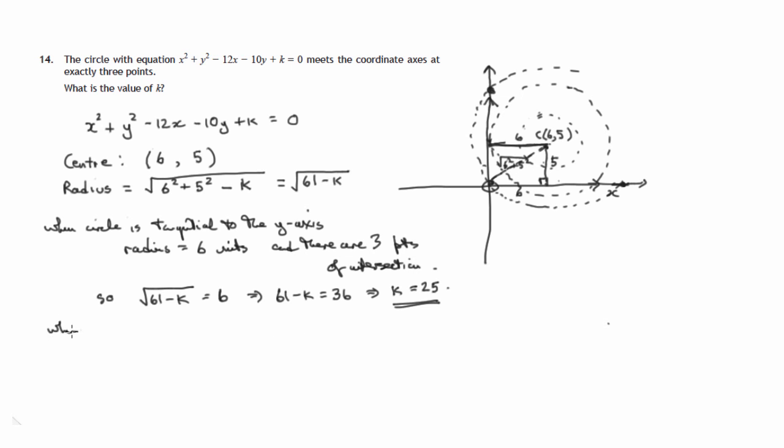And the radius will be given by the square root of six squared plus five squared. So when circle passes through origin, radius is equal to the square root of six squared plus five squared. We know is 61. That's the same as we calculated up here. The radius is the square root of 61. And there are three points of intersection.